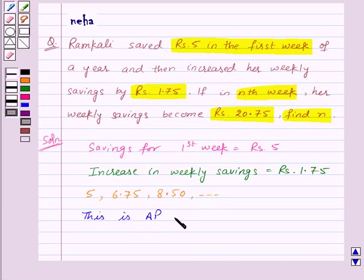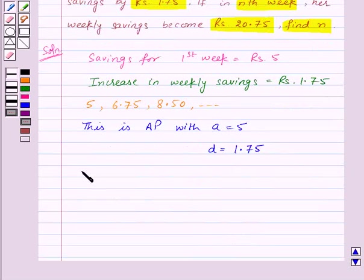Now if we see it carefully, then this is an AP with the first term, that is a, equal to 5, and common difference d equal to 1.75. Now in question it is given that in nth week her weekly savings become rupees 20.75. So that means we have an equal to 20.75 and we need to find the value of n.